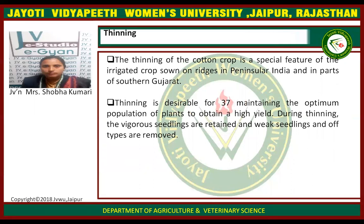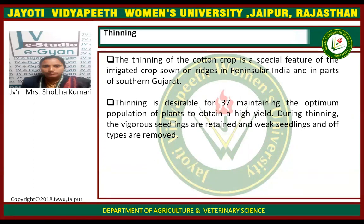Thinning. The thinning of the cotton crop is a special feature of the irrigated crop sown in the peninsula of India and in parts of southern Karnataka. Thinning involves removing undesirable plants or infested and diseased plants. Thinning is desirable for maintaining the optimum population of plants to obtain a high yield. During thinning, the vigorous seedlings are retained and weak seedlings and all off-types are removed.